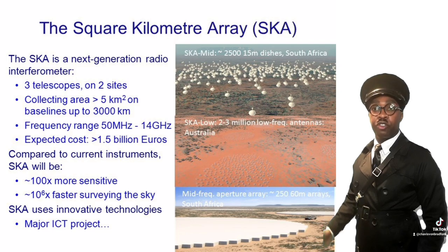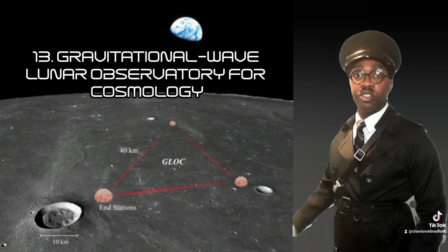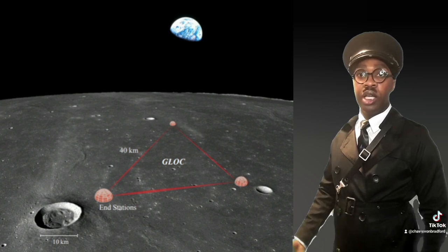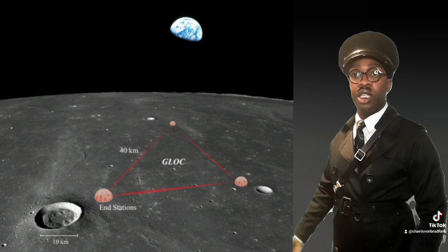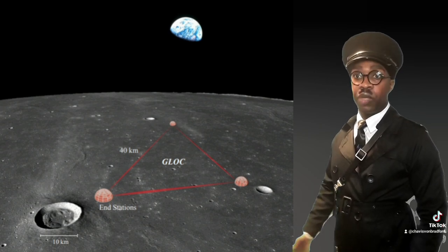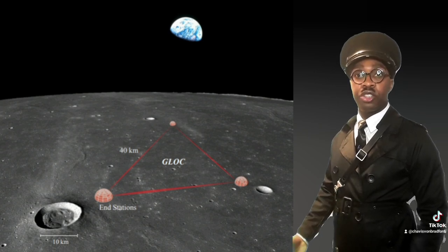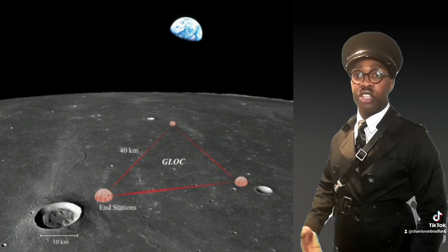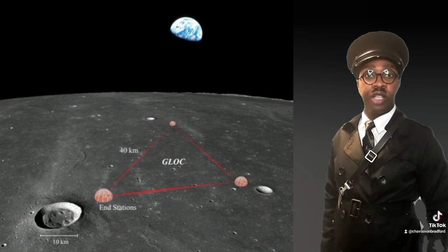The most impressive proposal for understanding the origins of the cosmos is the Gravitational Wave Lunar Observatory for Cosmology. The original concept for a gravitational wave observatory on the moon in the NASA Artemis era was proposed by Indian astrophysicist Karan Jani and Israeli-American physicist Avi Loeb. They reported that a lunar-based observatory is appropriate for studying primordial gravitational wave frequencies in the region of a deci-hertz to five hertz — an astrophysically rich regime that is difficult for both Earth-based and space-based detectors.